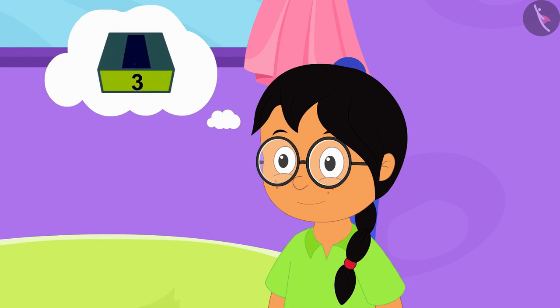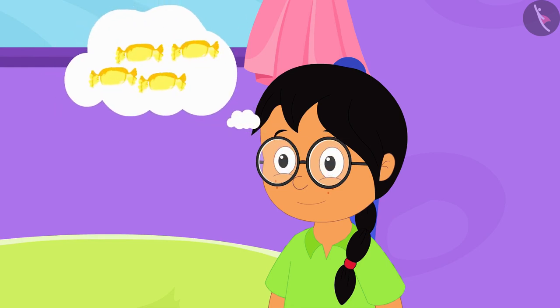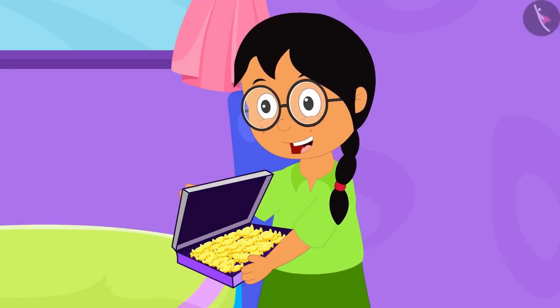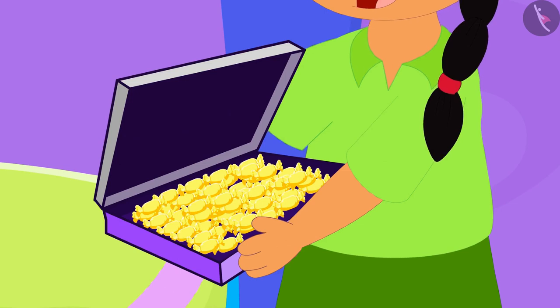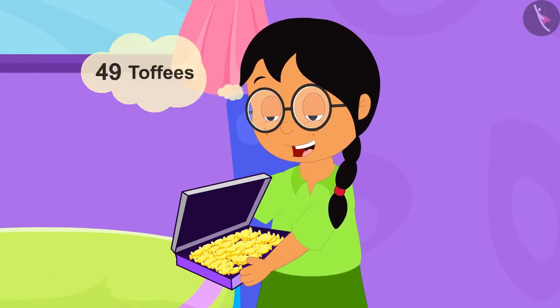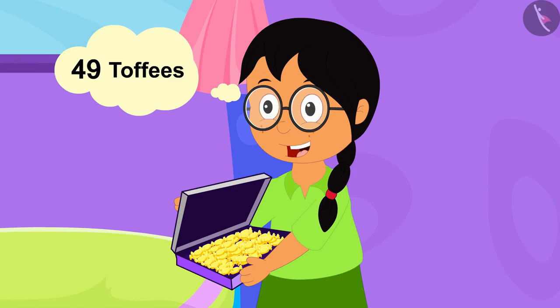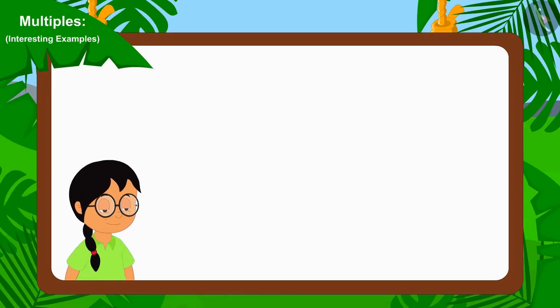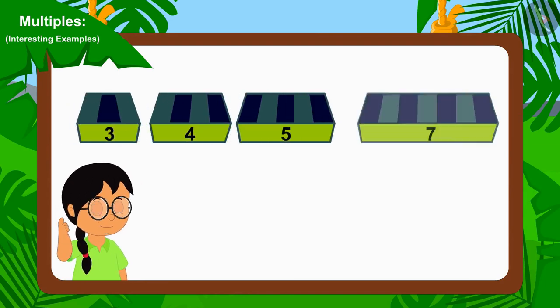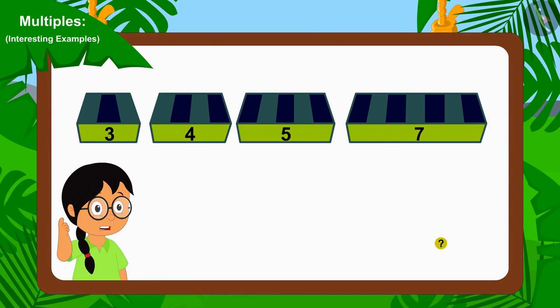She wants to divide them in such a way that no toffee is left. First, Minu opened a packet of pineapple toffees brought by her uncle. It has a total of 49 toffees. Now Minu is thinking which one out of the group of three, four, five, or seven should she use so that all the toffees are distributed equally.